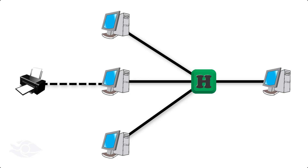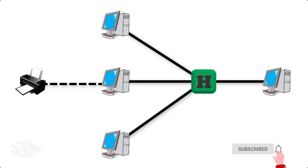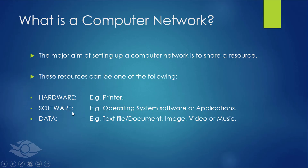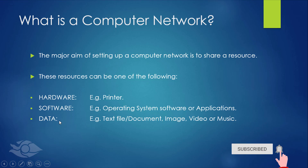The only downside, however, is that if this link becomes faulty or this computer shuts down, it will no longer be possible to access the printer. However, for some printers that have an ethernet interface, they can independently connect to the hub or switch and become more available. Also, the resource can be software, mostly operating system software or applications. And the last type of resource is data, which is very common.